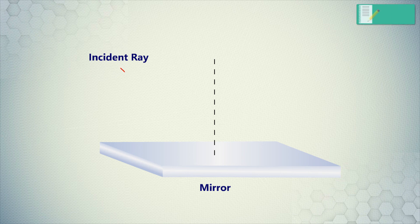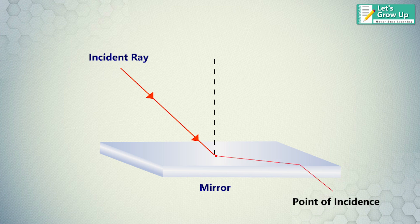Incident ray. The ray of light falling on the surface of a mirror is called incident ray. Point of incidence. The point at which the incident ray falls on the mirror surface is called point of incidence.